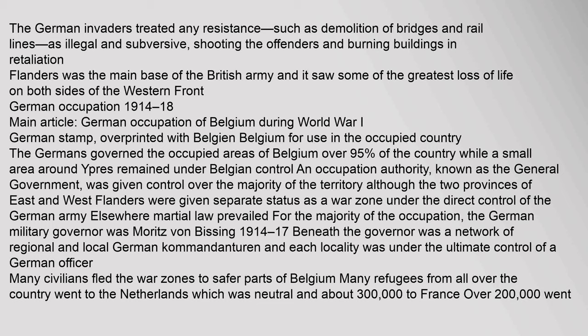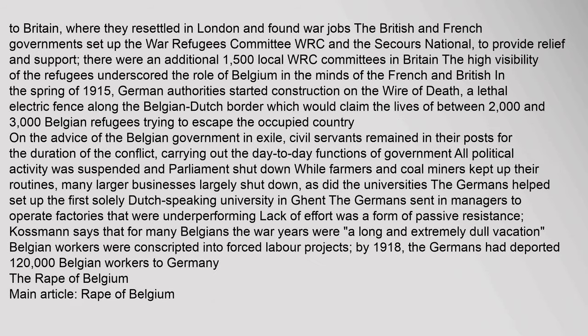Many civilians fled the war zones to safer parts of Belgium. Many refugees from all over the country went to the Netherlands, which was neutral, and about 300,000 to France; over 200,000 went to Britain, where they resettled in London and found war jobs. The British and French governments set up the War Refugees Committee and the Secours National to provide relief and support; there were an additional 1,500 local WRC committees in Britain. The high visibility of the refugees underscored the role of Belgium in the minds of the French and British. In the spring of 1915, German authorities started construction on the wire of death, a lethal electric fence along the Belgian-Dutch border.